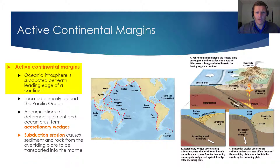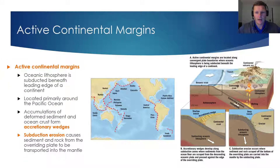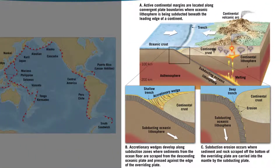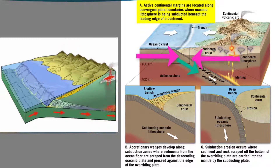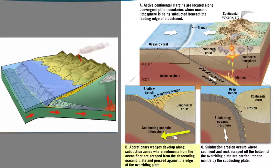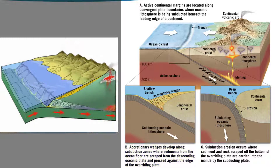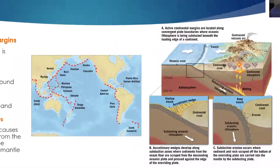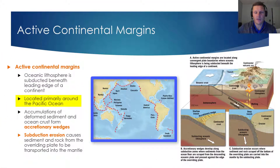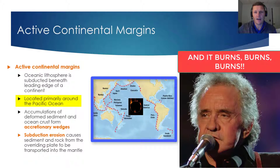Now let's shift to active continental margins. Active continental margins occur where oceanic lithosphere is subducted beneath the leading edge of a continent, along a convergent plate boundary, as shown in the image on the right. Some subduction zones contain an accretionary wedge, which can develop where sediment is beginning to pile up near the subduction zone. Not all subduction zones will have an accretionary wedge — sometimes sediments get carried into the mantle by the subducting plate, and when that happens, a deep ocean trench can form. Active continental margins are found primarily around the Pacific Ocean, in the region we call the ring of fire, indicated by red triangles in this image.